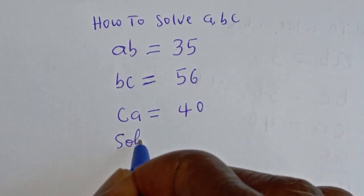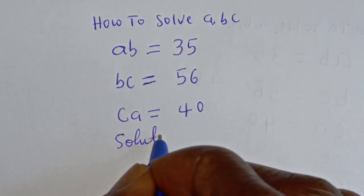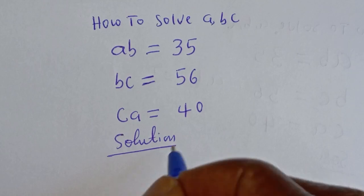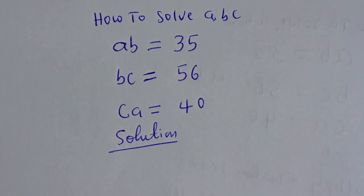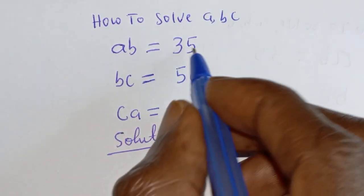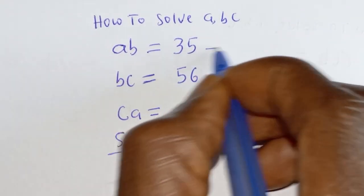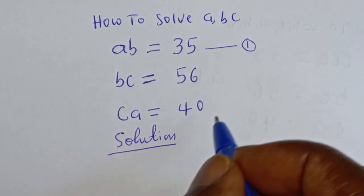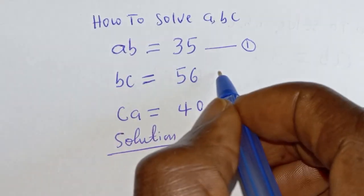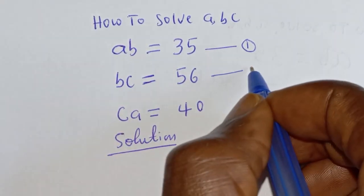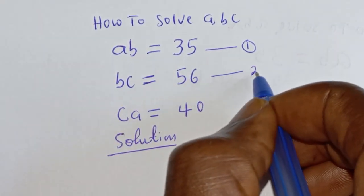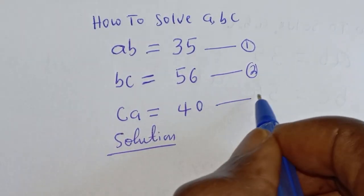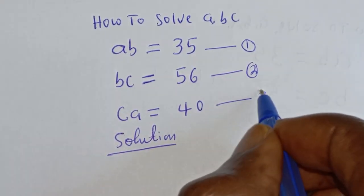Solution. AB is equal to 35 — let's call this equation 1. Then BC is equal to 56 — let's call this equation 2. And CA is equal to 40 — let's call this equation 3.